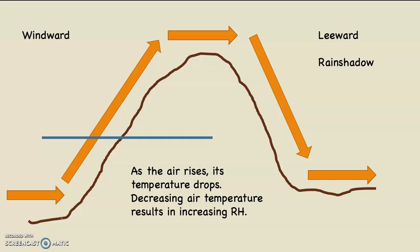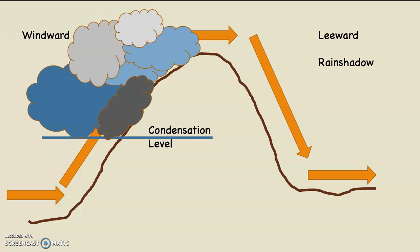I just drew a blue line onto our diagram. As the air rises, its temperature is going to drop. When air temperature is going down, relative humidity is going up — this is called rule number two. The decreasing air temperature is going to result in increasing relative humidity. And if you can drop the air temperature to the dew point temperature, the air will be saturated, the relative humidity will be 100%, and at that point a cloud is going to begin to form.